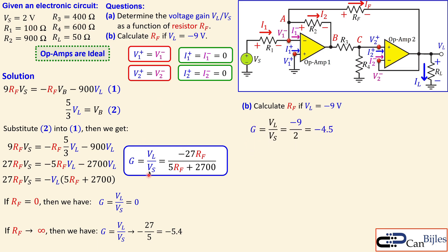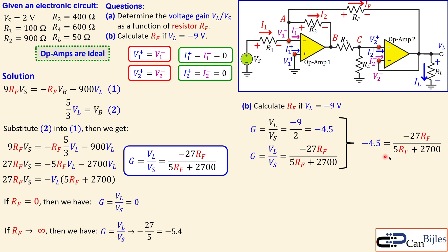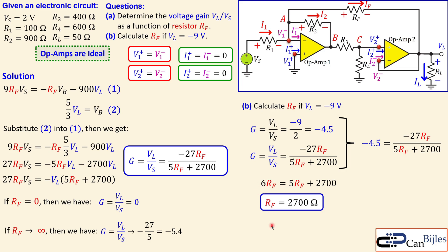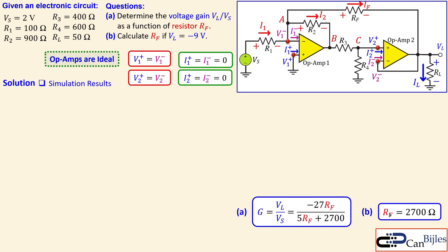Setting −4.5 equal to the gain formula: −4.5 = −27·Rf / (5·Rf + 2700). Cross-multiplying: −4.5·(5·Rf + 2700) = −27·Rf, which gives −22.5·Rf − 12150 = −27·Rf. Rearranging: 27·Rf − 22.5·Rf = 12150, so 4.5·Rf = 12150... yielding Rf = 2700Ω = 2.7 kΩ. This is the answer for question b.